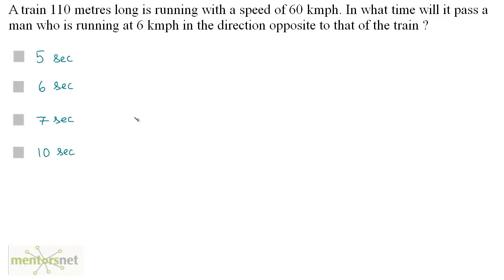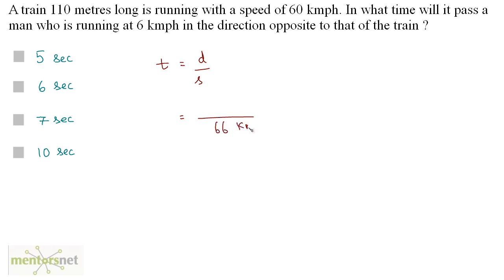A train 110 meters long is running with a speed of 60 kilometers per hour. In what time will it pass a man who is running at 6 kilometers per hour in the direction opposite to that of the train? The formula for time is distance upon speed. Since the man and the train are going in opposite directions, the relative speed is the addition of their speeds: 60 km/h plus 6 km/h, which is 66 kilometers per hour.